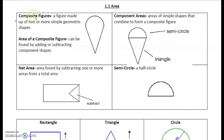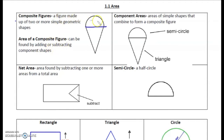Let's start with a couple definitions. A composite figure is a figure made up of two or more simple geometric shapes. For example, this looks like an ice cream cone — a triangle and then a semicircle, so half a circle. The area of a composite figure: all we do is find the area of one of the figures, the area of the second figure, and so on, and add them together.